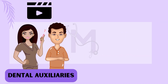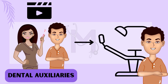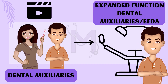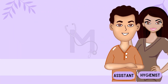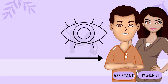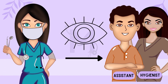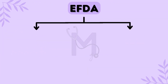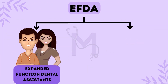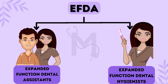In our video on dental auxiliaries, we learned that one of the major examples of operating auxiliaries was the Expanded Function Dental Auxiliaries, or the EFDA. A dental hygienist or dental assistant who has received further training in duties about the direct treatment of patients, but is still working under the direct supervision of a dentist, is referred to as Expanded Function Dental Auxiliaries. They can also be referred to as Expanded Function Dental Assistants or Expanded Function Dental Hygienists.